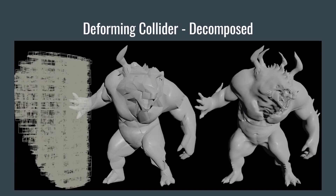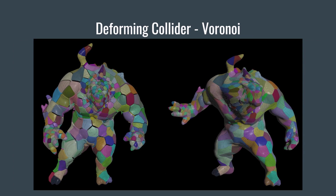Convex Decompose is also very helpful for deforming colliders. If you're computing it at a rest pose or rest frame, you don't want that decomposed geometry changing — you want to just point-deform it to match the animation.